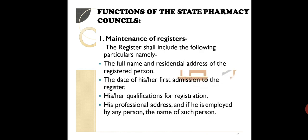Coming to the functions, there are 4 main functions: maintenance of register, entry and removal of names, removal of name from the register, and printing of register. First, what is a register? A register is a document in which the names of registered pharmacists are mentioned.